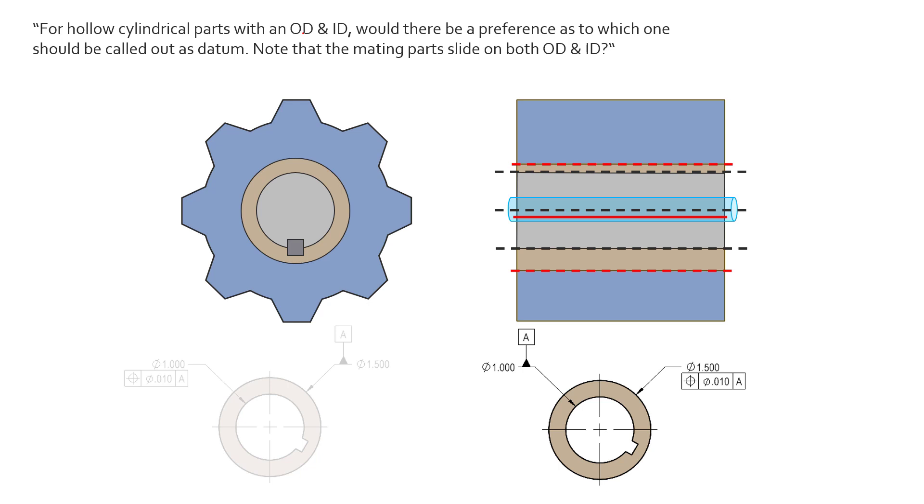One thing to note though is depending on your inspection department, what tools they might have at their disposal in order to simulate the datum, oftentimes simulating an external datum is a lot easier than trying to simulate an internal datum. So keep that in mind as a designer. If you can help out your inspection department by picking the datums that are easy to simulate, certainly do that.